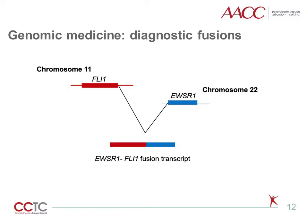Several diseases harbor diagnostic gene fusions that can be detected through RNA-Seq. For example, the EWSR1-FLI1 fusion involves the fusion of the FLI1 gene on chromosome 11 to the EWSR1 gene on chromosome 22, and is diagnostic for Ewing sarcoma.